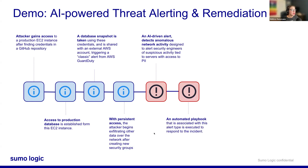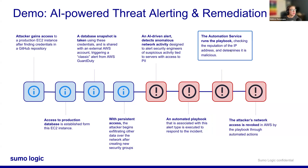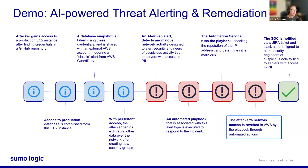With persistent access, the attacker begins exfiltration of data after creating new security groups, and we get an alert that detects anomalous network activity designed to alert security engineers of suspicious activity tied to servers with that access. Then we execute an automation playbook associated with the alert type. This also triggers a Slack alert. The automation service runs the playbook, checks the reputation of the IP address, and determines if it's malicious. The attacker's network access is revoked in AWS by the playbook through automated actions, and the SOC is notified via a Jira ticket.